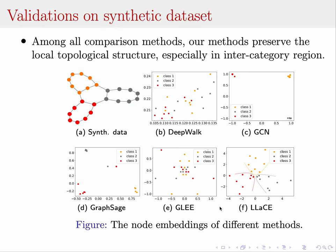For the experiment part, we validate the proposed model on both synthetic and real-world datasets. For the synthetic dataset, we give a visualization of embeddings in latent space, and we can see that our method best preserves the local topology, particularly in intercategory regions.